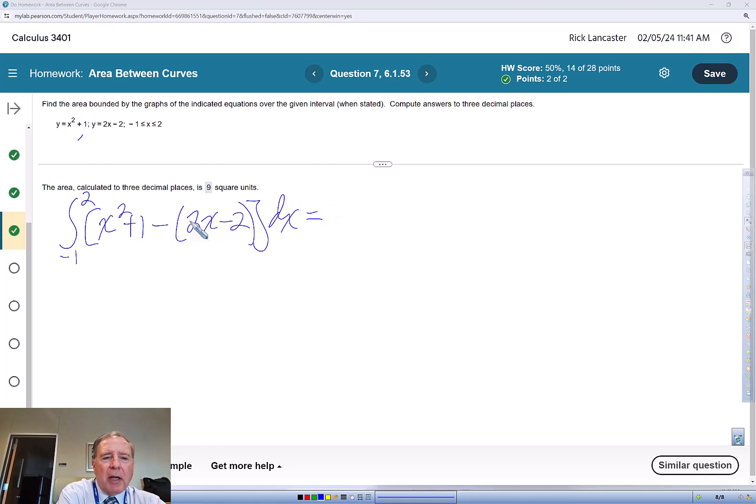We're going to simplify inside the bracket. So the integral from negative 1 to 2 of x squared. This is negative of a positive 2x, so minus 2x, and then 1 minus a negative 2 gives me plus 3 dx.